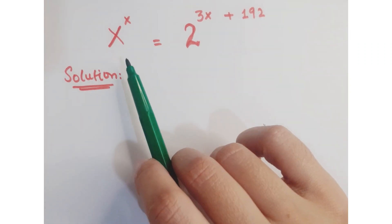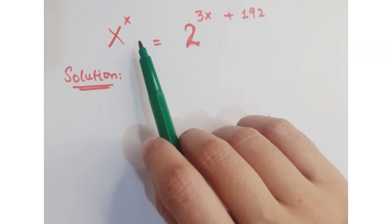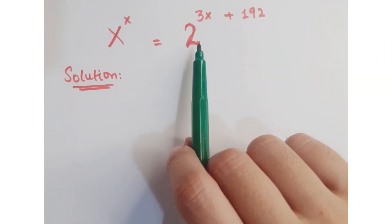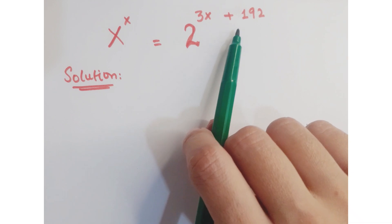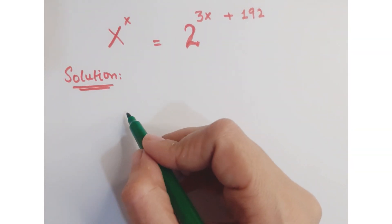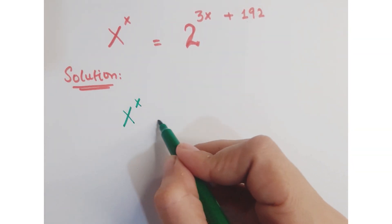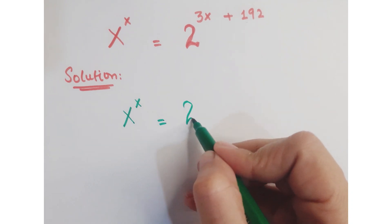Hi guys, look at this question. The question is x to the power x is equal to 2 to the power 3x plus 192. Let's see how we proceed in this question.